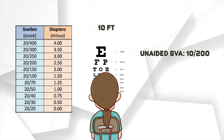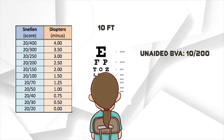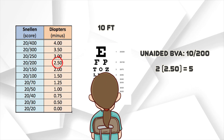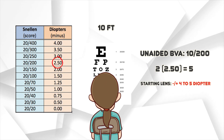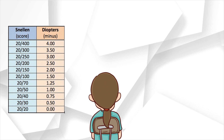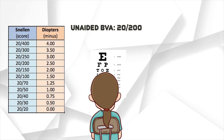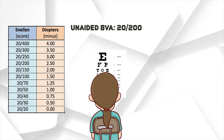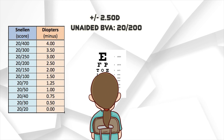For example, a patient that has a BVA of 10 over 200: we multiply 2.50 by 2, resulting in a starting lens of minus and plus 4 to 5 diopters. In this demonstration, if the patient has an unaided BVA of 20 over 200, we will use plus and minus 2.50 diopters.